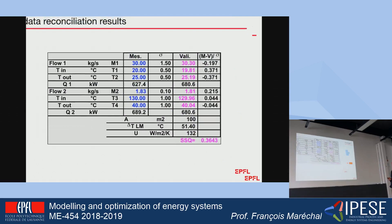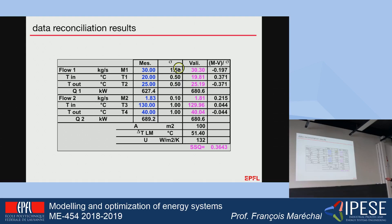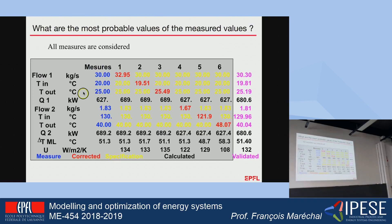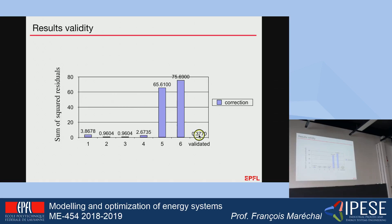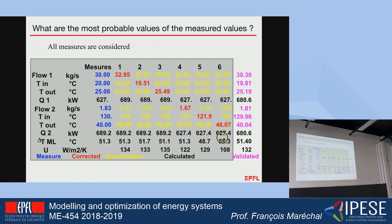Solving this problem with our example, I minimize considering the standard deviation of each of the measurements, and I obtain corrected values that I can compare with the original ones. The flow is a little bit modified; the temperature is a little bit modified as well. This is the most probable value for the heat transfer coefficient. Looking at the objective function — the sum of squared residuals of the corrections — with the data reconciliation I have the smallest corrections, which means it is the one with the highest probability of being the correct solution.